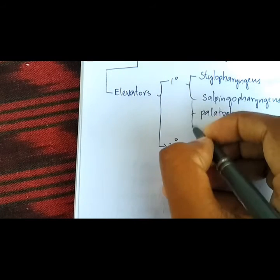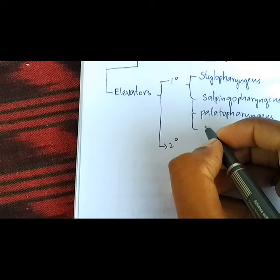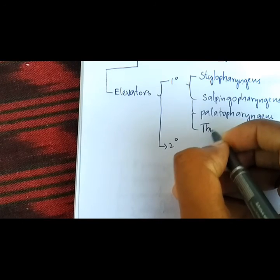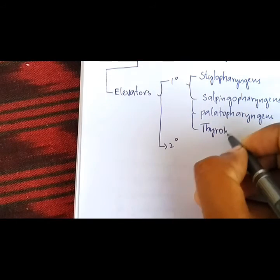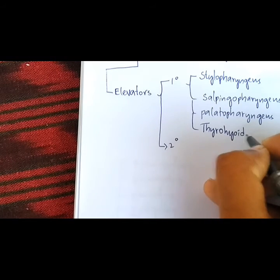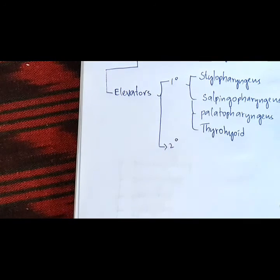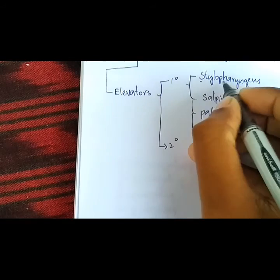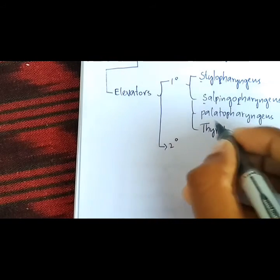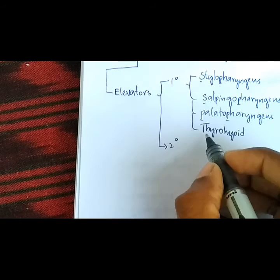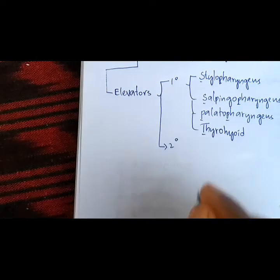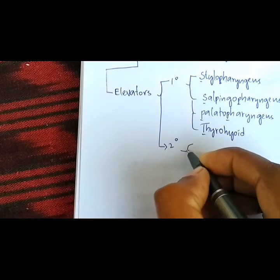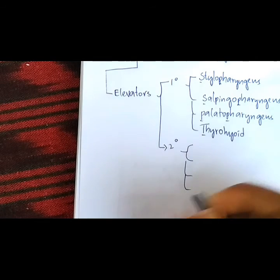And if you can remember the T of TOS — thyrohyoid. I remember this as SP, SP, PP and the T of TOS. Now secondary elevators include the DSMG, which are the suprahyoid muscles.